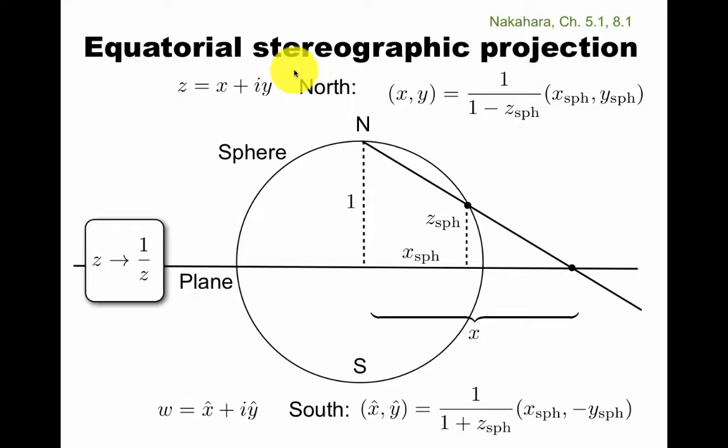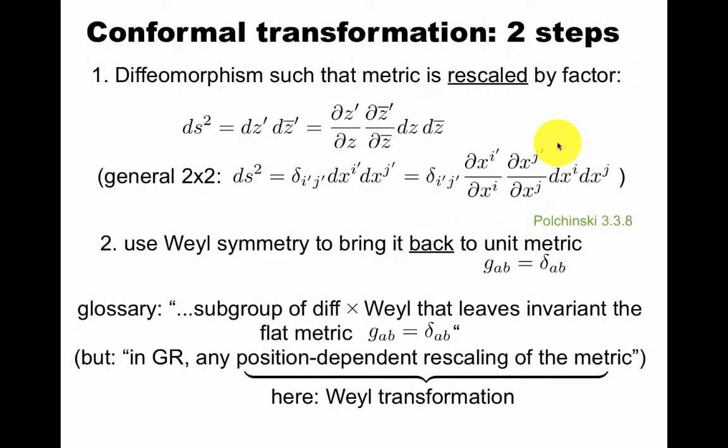In another video, I discuss the equatorial stereographic projection, which is to us a more directly relevant projection than the Mercator projection. The north and the south stereographic projection are switched by z goes to one over z, as is easy to see if you work out relation between these two representations.